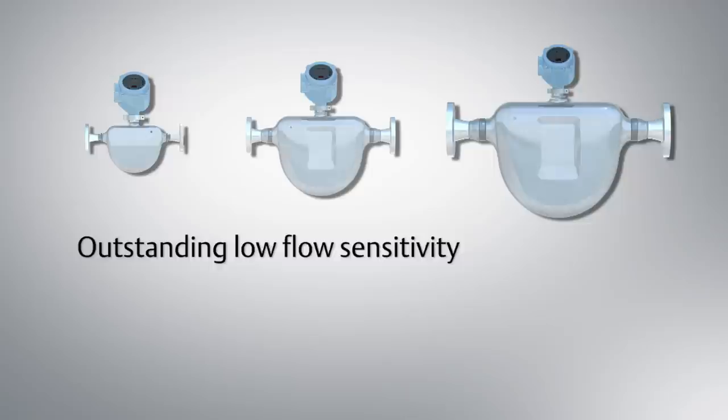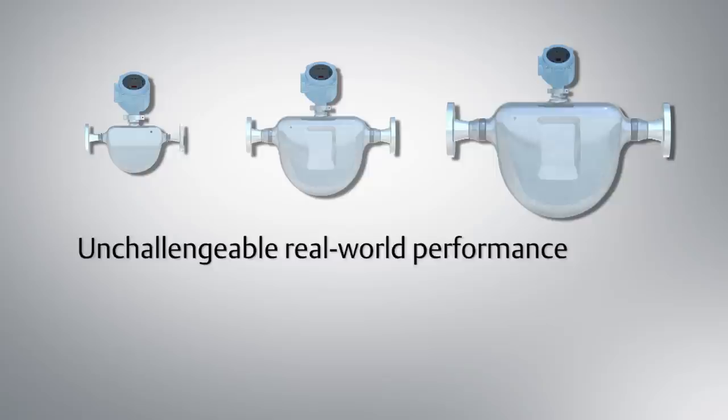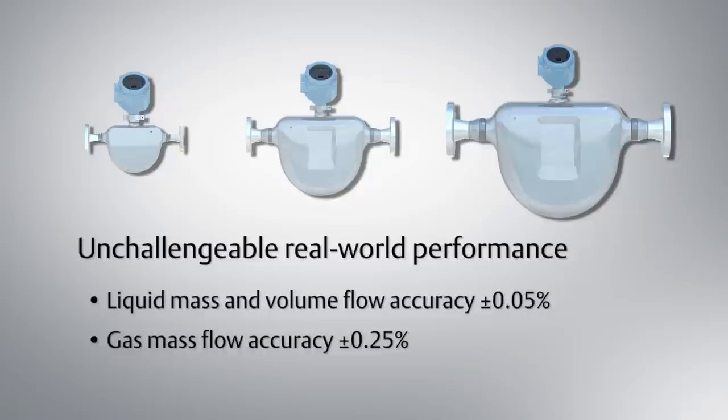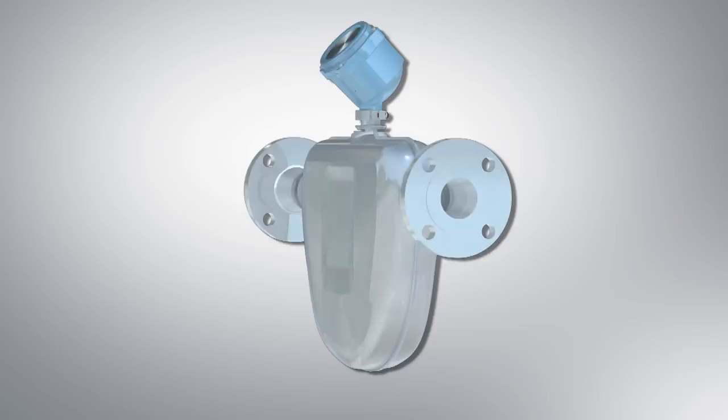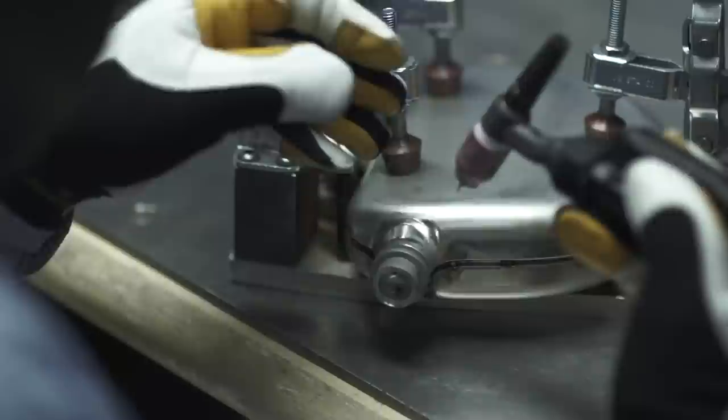Elite CMFS Coriolis meters feature outstanding low flow sensitivity and stability, and deliver unchallengeable real-world performance with liquid mass and volume flow accuracy of 0.05%, world's best-in-class gas flow accuracy of 0.25%, and liquid density accuracy of 0.0002 grams per cubic centimeter. These meters can be counted on to deliver the most accurate and robust measurement available for your critical process applications.